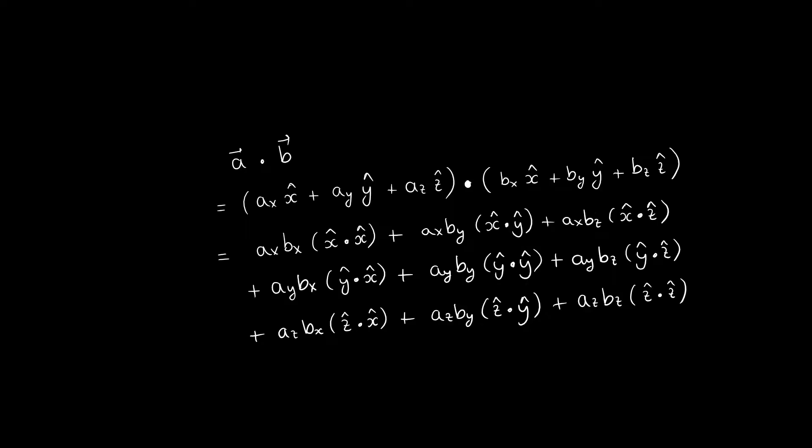Now, we know that the dot product of vectors x hat times x hat must equal 1, y hat times y hat also equals 1, and the same for z hat times z hat. While all the others must equal 0, because the unit vectors are orthogonal to each other. Therefore, the dot product can be mathematically written in this very simple way.